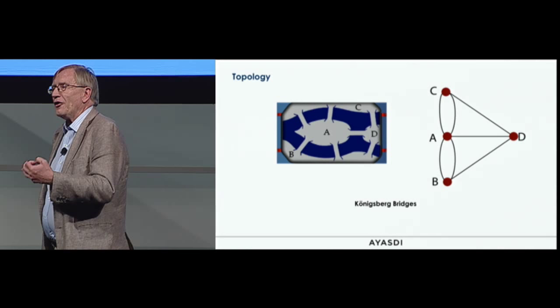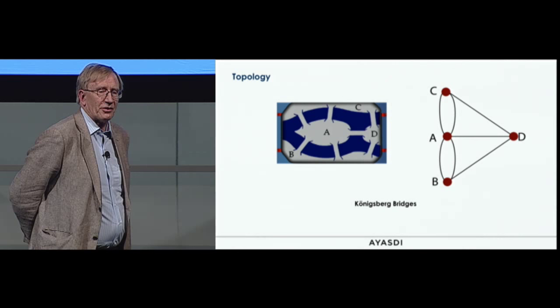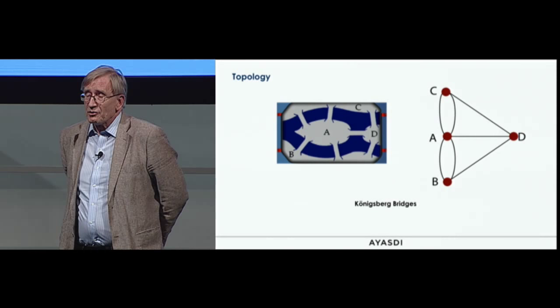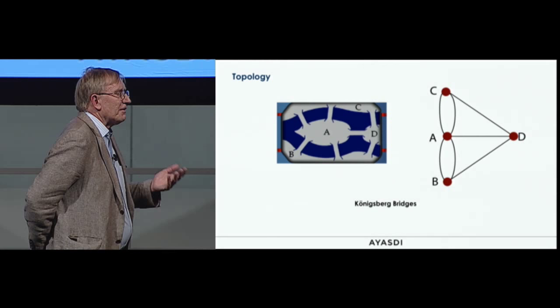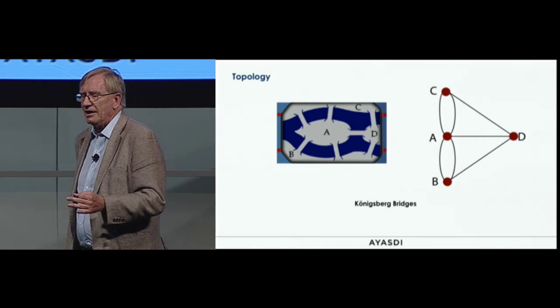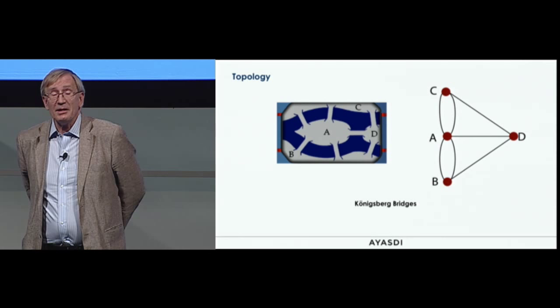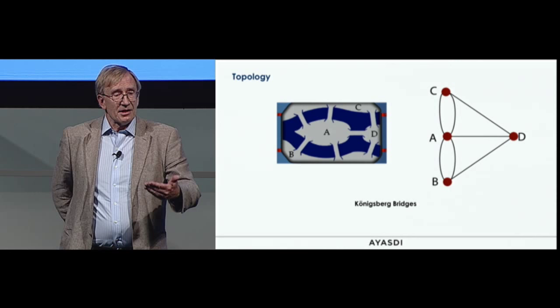The very first paper in topology solved the following recreational math problem: can you cross all the bridges across the River Pregel in Königsberg, crossing each bridge exactly once? It was solved by Leonard Euler. He solved it by recognizing that a lot of the detail doesn't matter — not how deep the river is or how wide. All that matters is a certain network structure, and by looking at that simplified network, he was able to reason out and solve the problem.